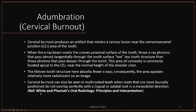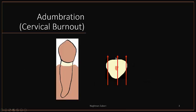I have taken this word by word from White and Farrow's Oral Radiology Principles and Interpretation. Cervical burnout produces an artifact that mimics a carious lesion near the cementoenamel junction area of the tooth. When the x-ray beam meets the convex proximal surface of the tooth, those x-ray photons that pass almost tangentially through the tooth surface see less tooth structure than those photons that pass deeper through the tooth.